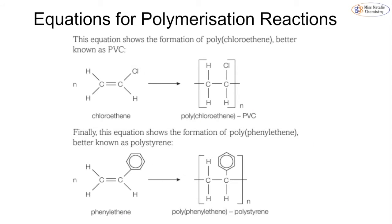For chloroethene making polychloroethene, also sometimes known as PVC (polyvinyl chloride). For polystyrene, we have phenylethene with this phenyl group - otherwise known as a benzene ring. It doesn't matter if you've not seen this before; you simply draw exactly the same thing in the repeat unit. The only difference is you remove your double bond, add your extension bonds, square brackets, and your n.